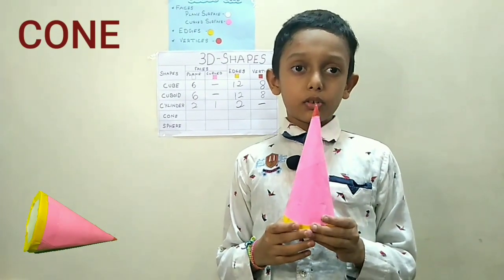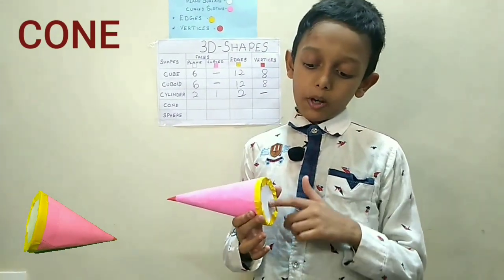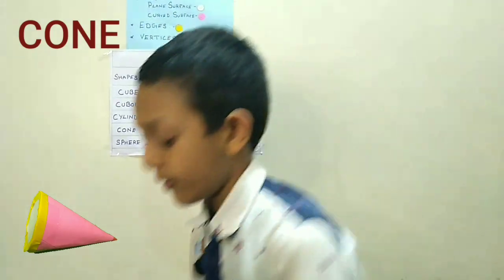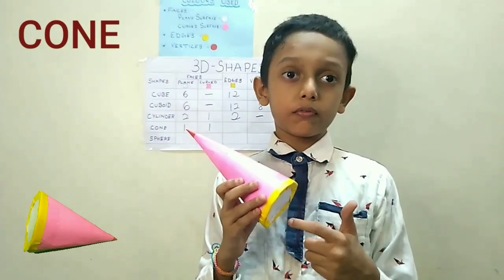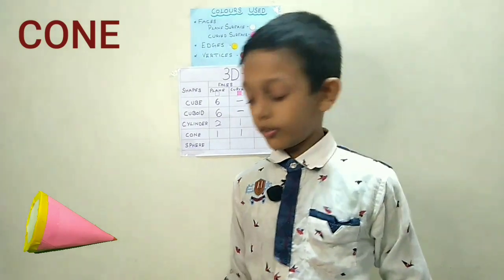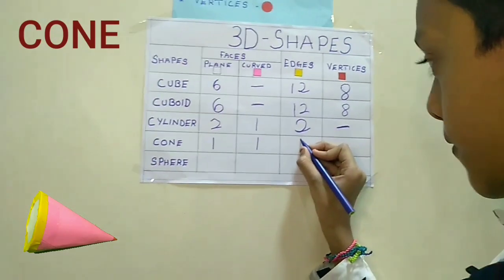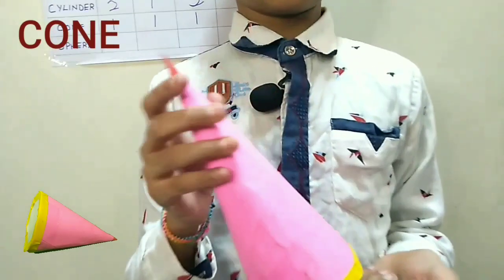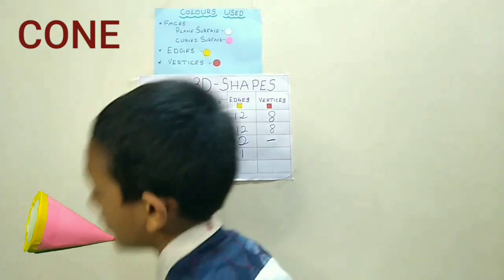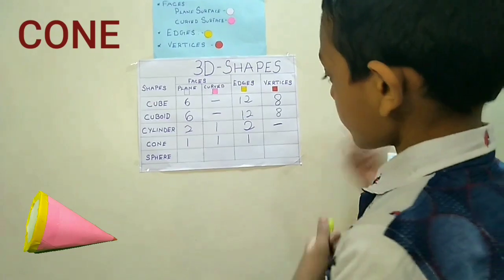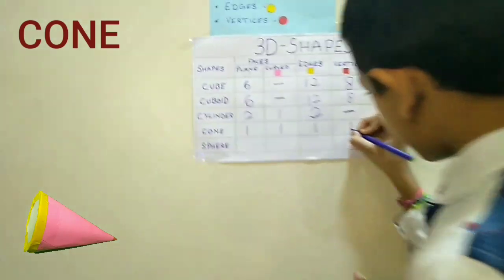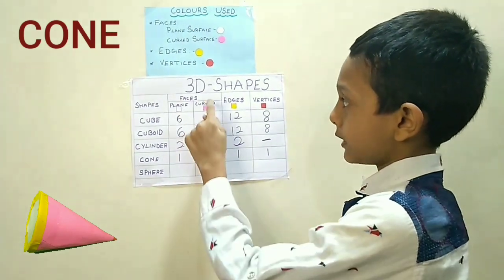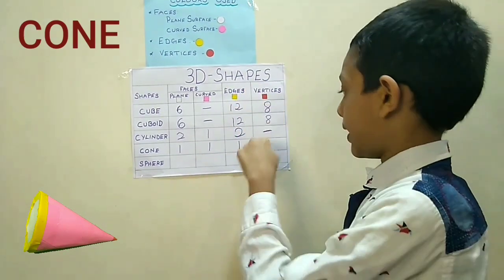Now let's count the faces of the cone. 1 plane surface and 1 curved surface. So there are 2 faces in the cone. Now let's count the edges of the cone. 1. So there is 1 edge in the cone. So we will write here 1. Now let's count the vertex of the cone. 1. So there is 1 vertex in the cone. So the cone has 1 plane surface, 1 curved surface, 1 edge and 1 vertex.